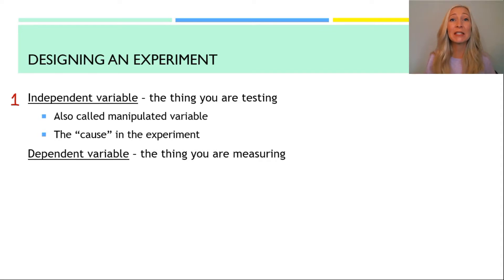The second term is called the dependent variable. This is what you are going to be measuring. Sometimes it's called the responding variable because it responds to what you have changed. It responds to the independent variable. Usually when you design an experiment, you have one dependent variable in mind, but you could also be measuring many other things. So it's important to note that while you have one independent variable, you may have more dependent variables.